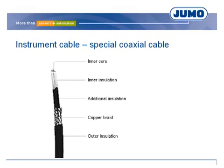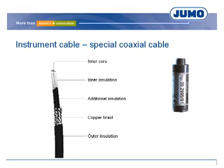Due to the high resistance of the low voltage signal, special coaxial cables are necessary for connecting the electrode and transmitter. Standard antenna cables are unsuitable. The inner core transfers the signal of the pH electrode; the copper braid transfers the potential of the reference electrode. The cable should be as short as possible. When the cable is longer than 15 meters, an impedance converter is recommended, and it must be screwed onto the electrode.